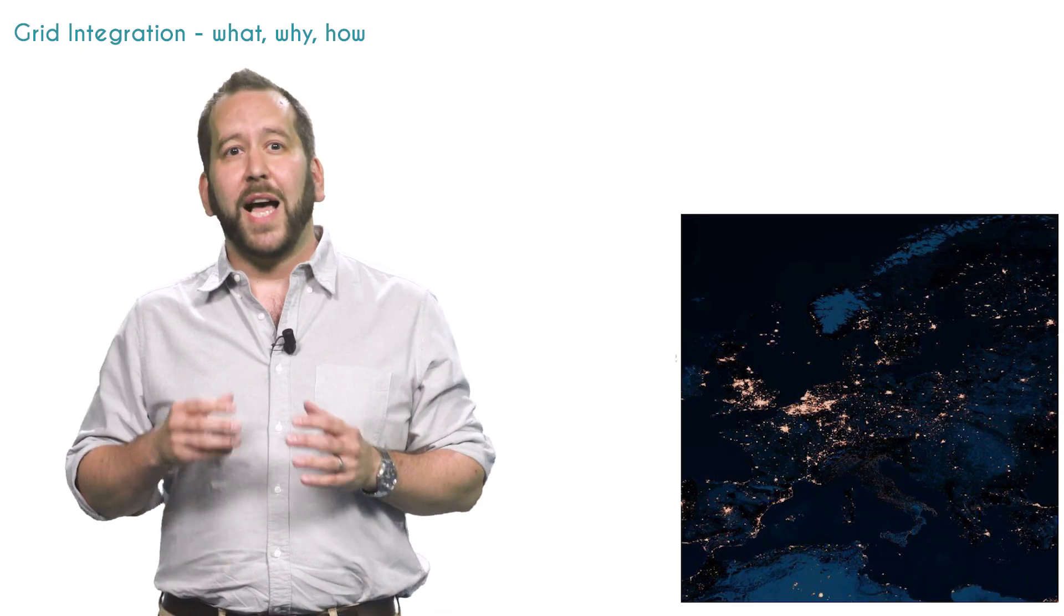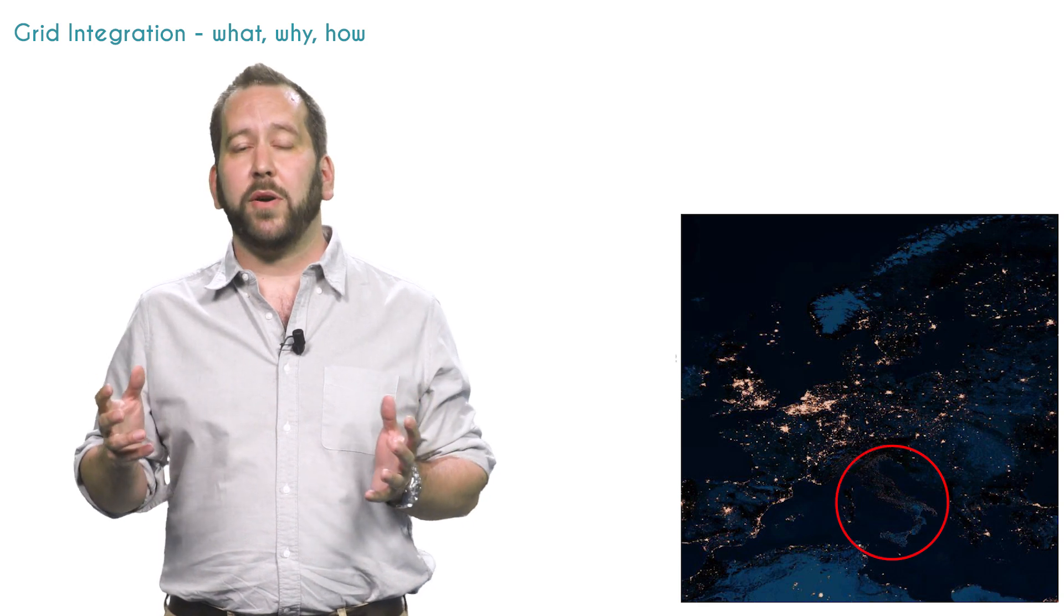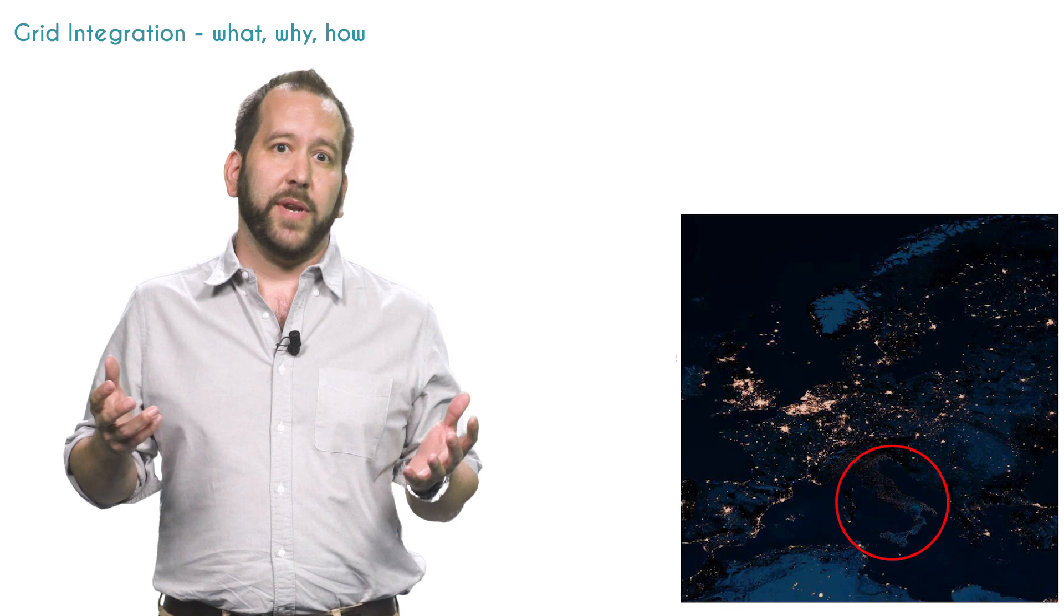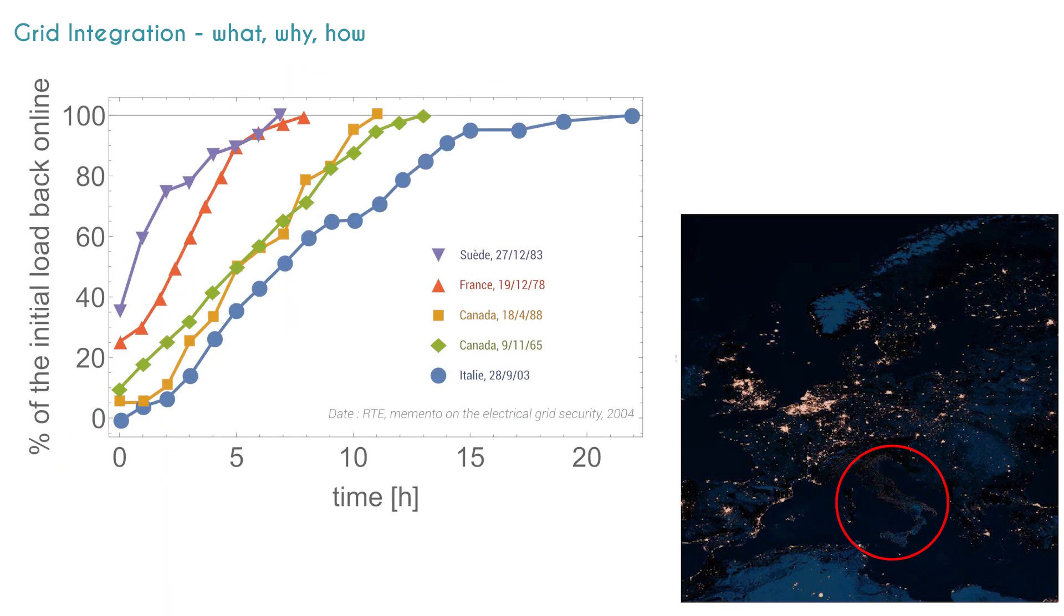The collapse of the electrical system is called a blackout. A blackout can plunge whole countries into darkness and several dozens of hours can be necessary to restart the network. This graph shows for instance that the recovery of the national energy supply after major failures can take more than 20 hours.